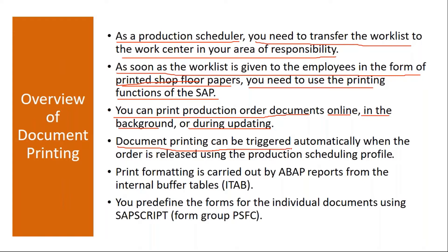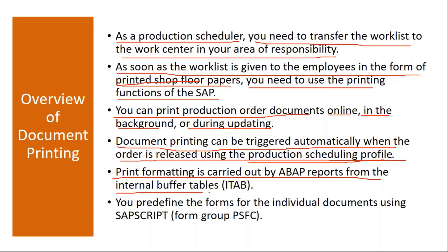Document printing can be triggered automatically when the order is released, using the production scheduling profile — which we discussed in our previous session. The moment you release the order, you can trigger the print. Print formatting is carried out by ABAP records from the internal buffer tables. You pre-define the forms for the individual documents using SAP Script. Various programs and layout forms are available, and using those you can print the production order.